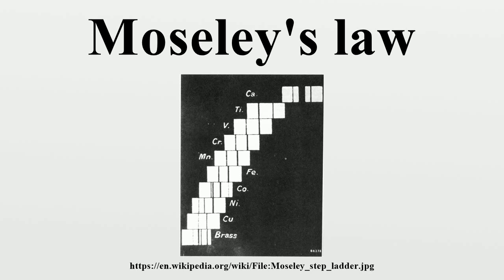Moseley was able to show that the frequencies of certain characteristic x-rays emitted from chemical elements are proportional to the square of a number which was close to the element's atomic number, a finding which supported Van den Broek and Bohr's model of the atom in which the atomic number is the same as the number of positive charges in the nucleus of the atom.